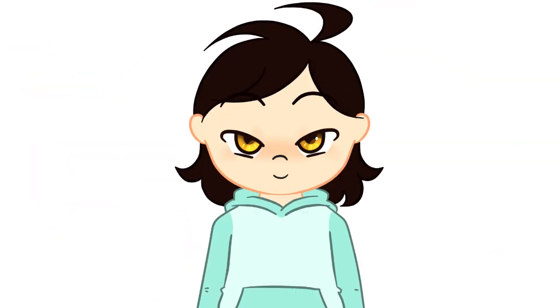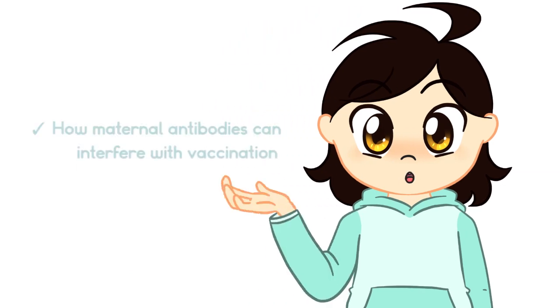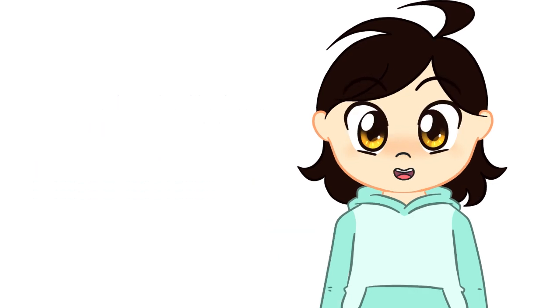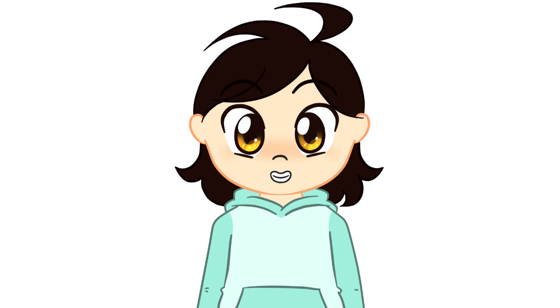To recap, in this video we talked about how maternal antibodies can interfere with vaccination, and when to start vaccinating as the levels decrease. In the next video we will go into greater detail about the vaccines puppies and kittens receive.